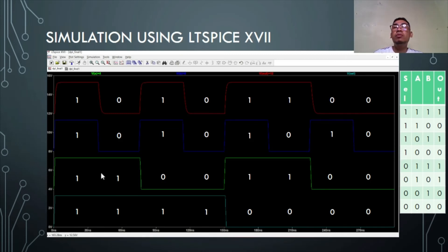This is now the simulation of our circuit using LTSpice. At the bottom line, this is the select. The green line, this is input A. The blue line, this is input B. And the red line, this is the output. From our truth table, it corresponds to our simulation.